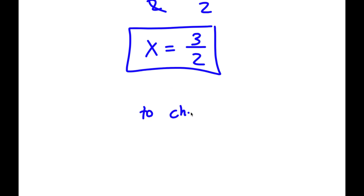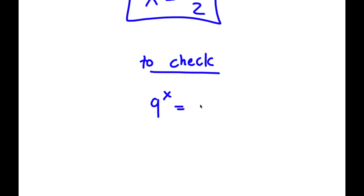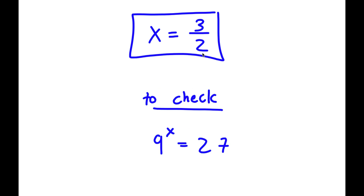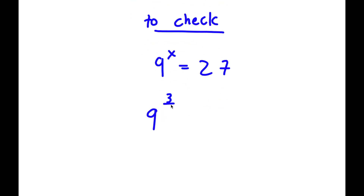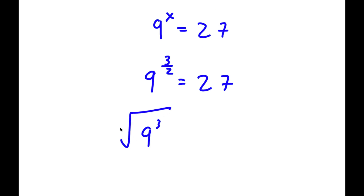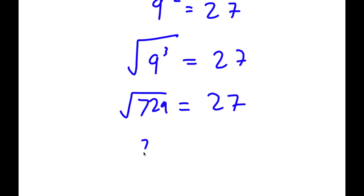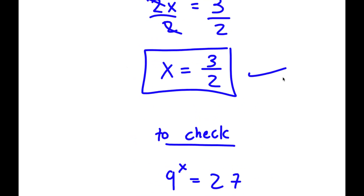Now, to check: start with 9 to the power of x equals 27, and x equals 3 over 2. So I have 9 to the power of 3 over 2 is equal to 27. Now, 9 to the power of 3 over 2 is the same as the square root of 9 to the power of 3. 9 to the power of 3: 9 times 9 is 81, and 81 times 9 is 729. So I have the square root of 729, which is 27. So 27 equals 27, and because this is correct, my solution is right.